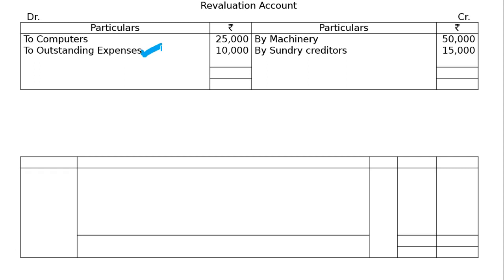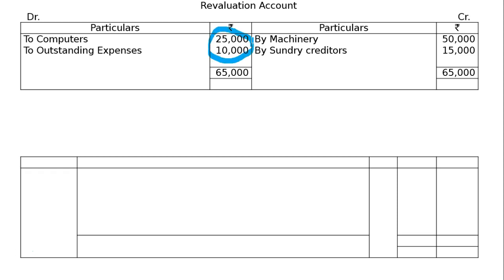Ab hamara revaluation complete. Credit side badha hai toh credit side ka total column mein likho — yeh hai 65,000. Isko debit side mein transfer karo — we'll have a profit. 65,000 se hum 35,000 minus kar denge, we'll be getting 30,000 — to revaluation profit 30,000. Yeh revaluation profit ko all partners ko old ratio mein baatna chahiye, agar future mein balance sheet mein purana value aayega.